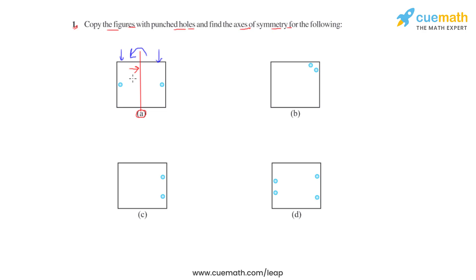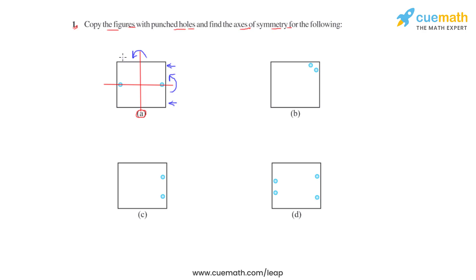Now, let us see if we can have more than one axis of symmetry for a given figure. If we again divide figure A into equal halves using a horizontal line, and we fold the figure about this line, we will again see that both equal halves of the figure will coincide.